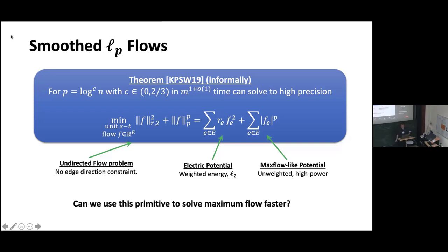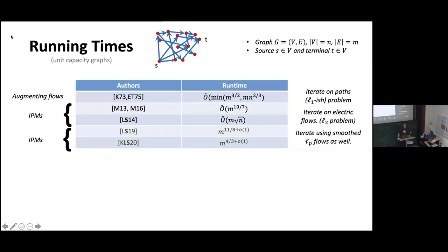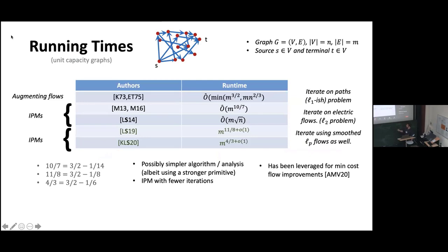So can we use this to solve maximum flow faster? That's the punchline of this talk — indeed you can. In this joint work, the 10/7 result was first improved to 11/8, which is 3/2 minus 1/8. The current state of the art in the sparse regime is 4/3, which is 3/2 minus 1/6. In my opinion, the algorithms get simpler and simpler. It's simpler at the moment when you black-box these L2-plus-LP solvers, and it's worth noting these improvements have been leveraged for broader problems like minimum cost flow.